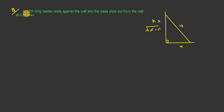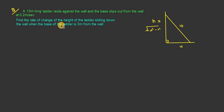Let's have a look at this question. A 10 m long ladder rests against the wall and the base slips out from the wall at 0.2 m per second. And the question says, find the rate of change of the height of the ladder sliding on the wall when the base of the ladder is 3 m from the wall. So here's my ladder, it's 10 m long. It's sliding against the wall, and it's sliding out at 0.2 m per second. So I know that dx dt is equal to 0.2.